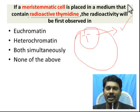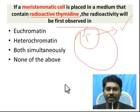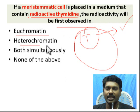So the daughter cells contain radioactive thymine. The question asks about the radioactivity observed in the daughter cells — the answer involves both euchromatin and heterochromatin.